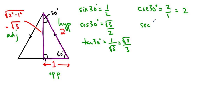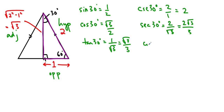Sec 30 degrees is hypotenuse over adjacent, 2 over root 3, which when rationalized ends up being 2 root 3 over 3. And cotan of 30 degrees is adjacent over opposite, root 3 over 1, which is just root 3.